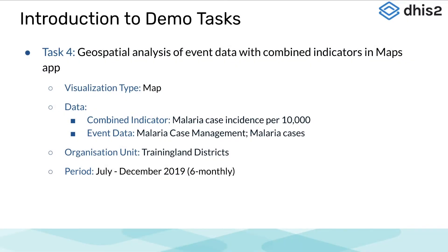Following on from the third task, the fourth and final task is to use the Maps app to view the data in the third task geospatially. In this example, we will compare the raw number of malaria cases with the incidence of malaria cases per 10,000 people in different districts. We will view these data for all districts in training land and for a six-monthly period of July to December of 2019.